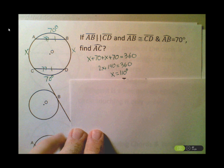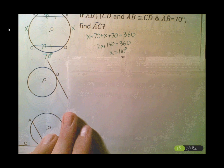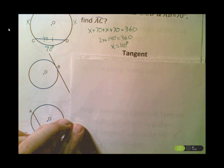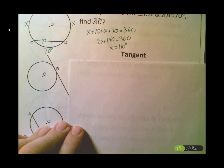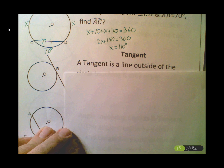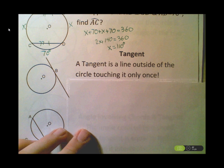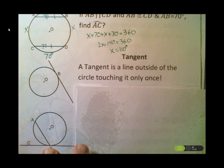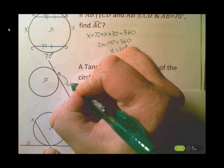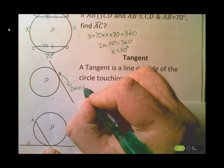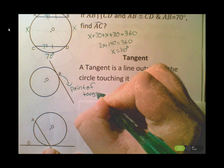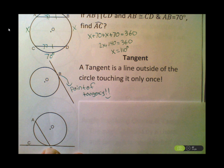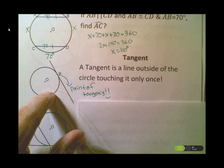We need one more definition before the third theorem: a tangent. Unlike the trig tangent, a tangent here is a line outside the circle that touches it only once. I have a line touching the circle once at point B, and point B is called the point of tangency — the point where the tangent line touches the circle.